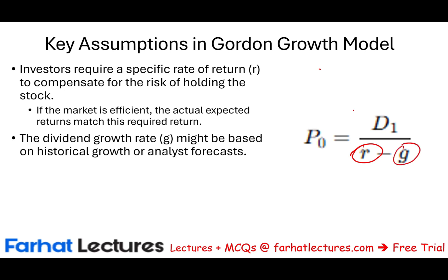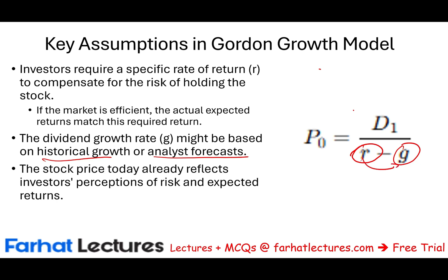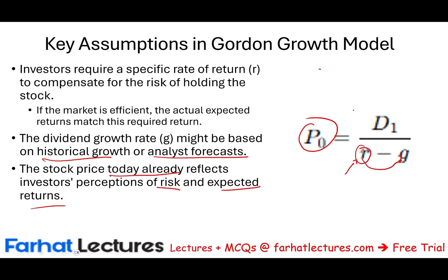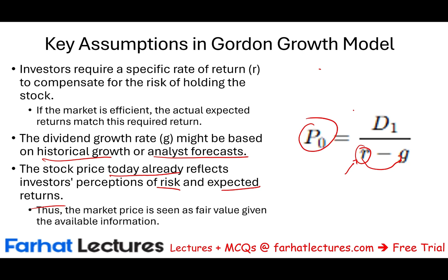The dividend growth G — how do we compute this? It's based on historical growth, analyst forecasts, and other factors — how much we expect the company to grow. Remember, we assume R is greater than G. And P0, the stock price today, reflects risk and expected return. Risk is factored into the required rate of return: the higher the risk, the more return you require. The expected growth and the dividend the company will pay are also considered. Therefore, P0 equals D1 divided by R minus G.